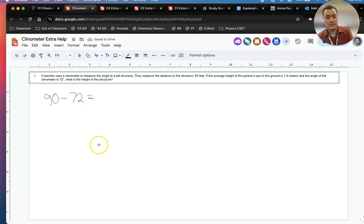And Elijah, what do you get? 90 minus 72. 18. So 18 is the angle of our clinometer, is the true angle.